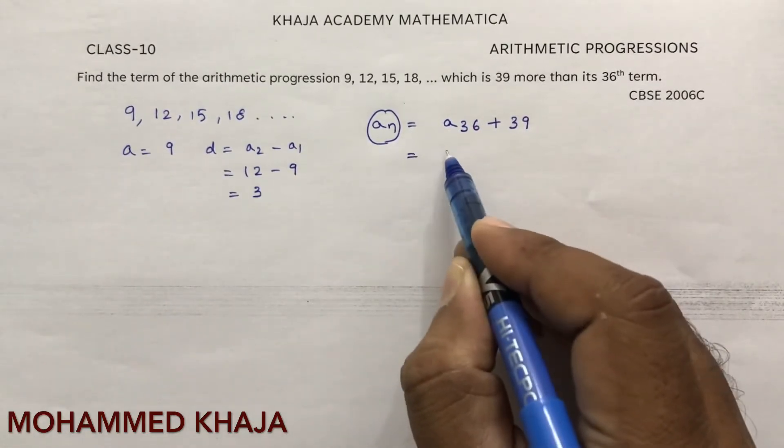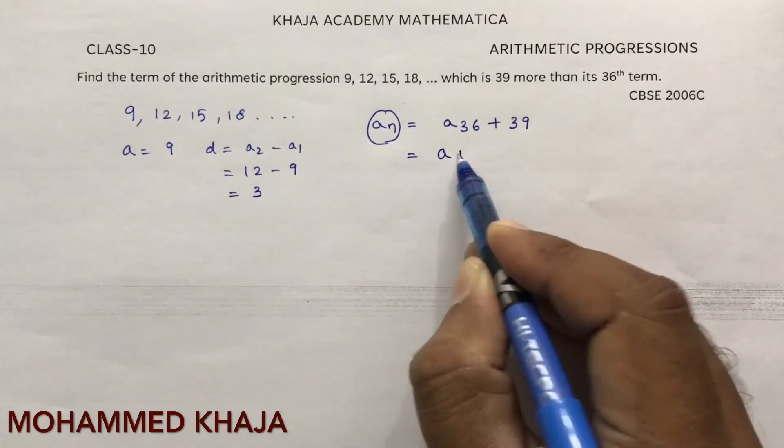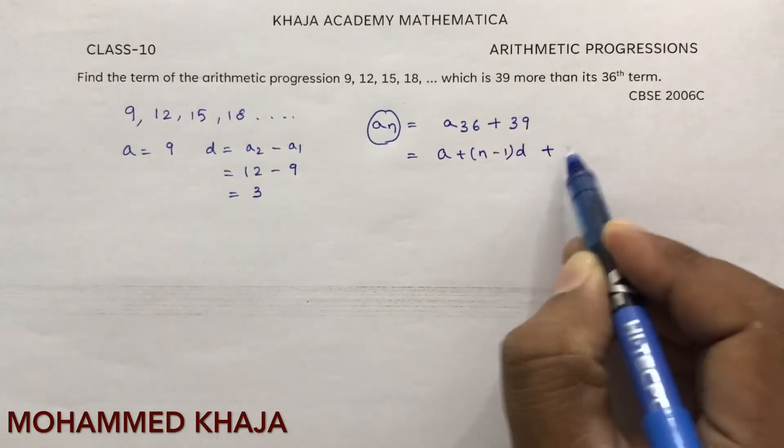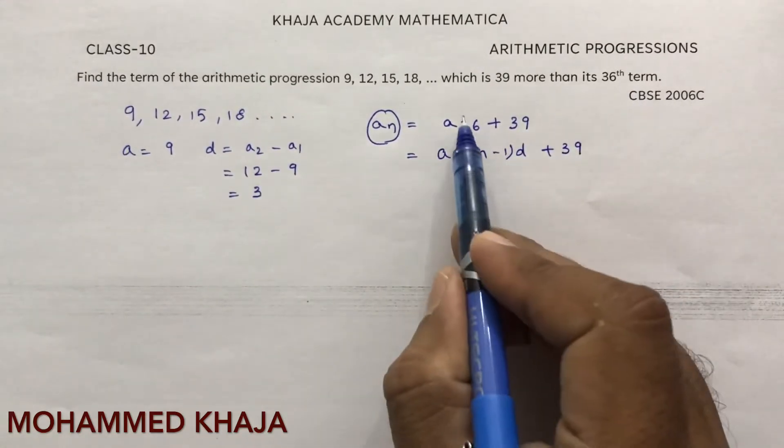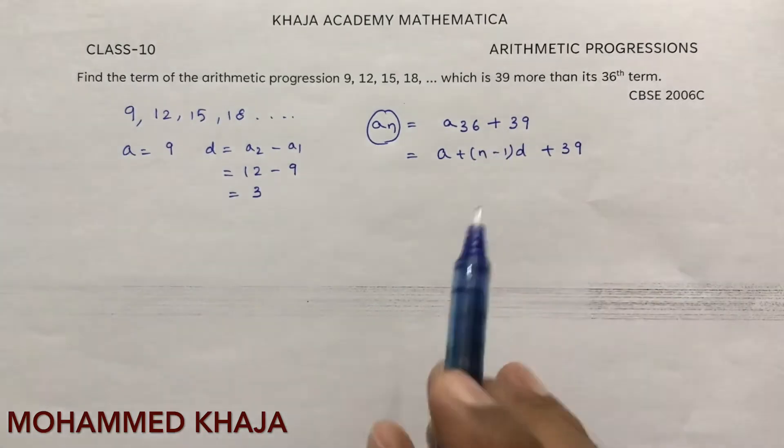The 36th term uses the formula a plus n minus 1 into d. So we have a plus 36 minus 1 into d plus 39, which you can directly write as a plus 35d plus 39.